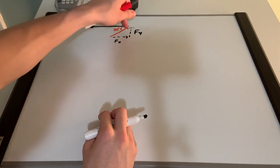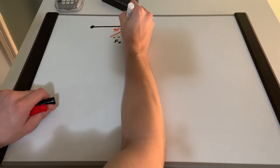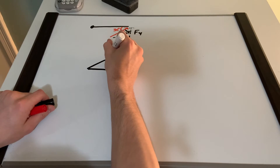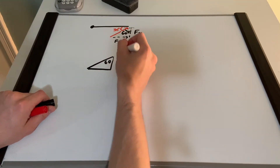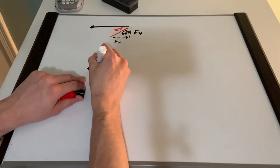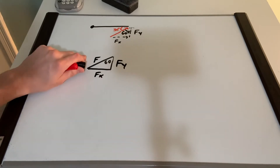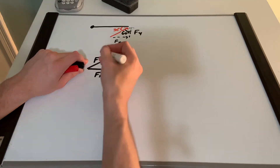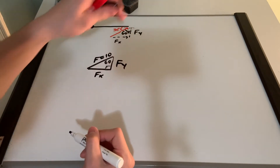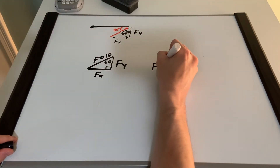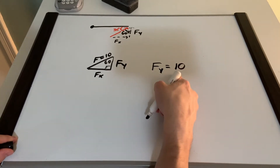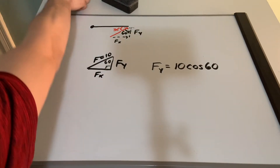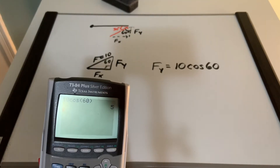If this angle is 30 degrees, then this complementary angle is 60. We need to solve for Fy, so we have a triangle with 60 degrees, F sub y, F sub x, and our force which we know to be 10 newtons. We know this is a right triangle because we made it into its component parts. So F sub y is going to be equal to 10 newtons multiplied by cosine of 60. Put this in the calculator and we should get a value of 5 newtons.